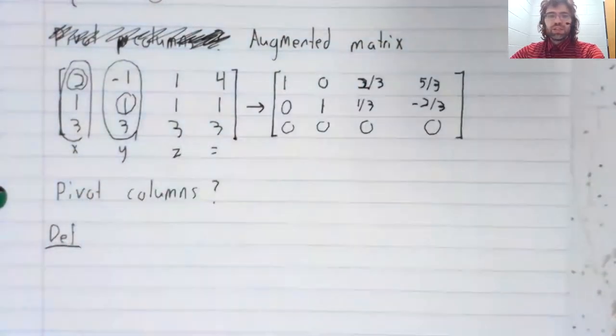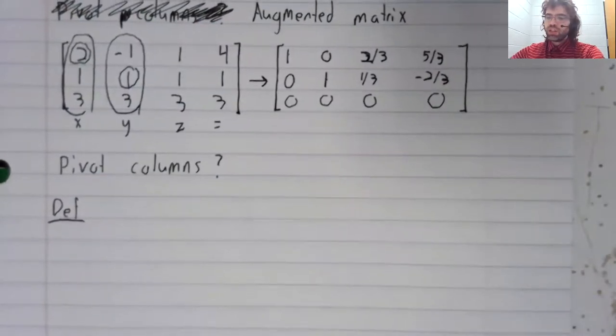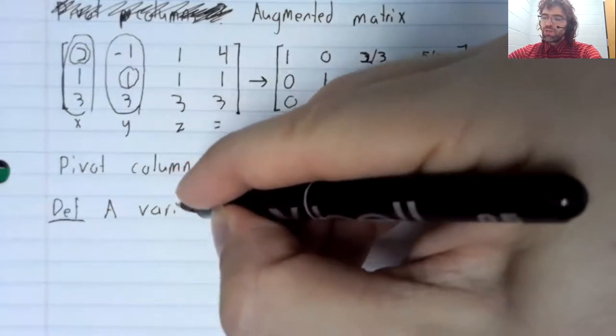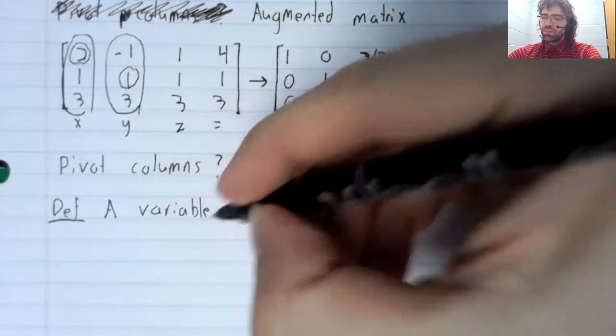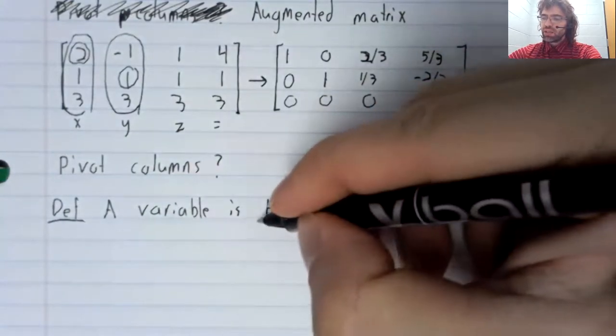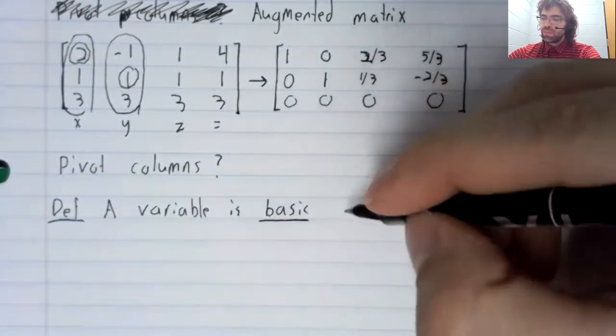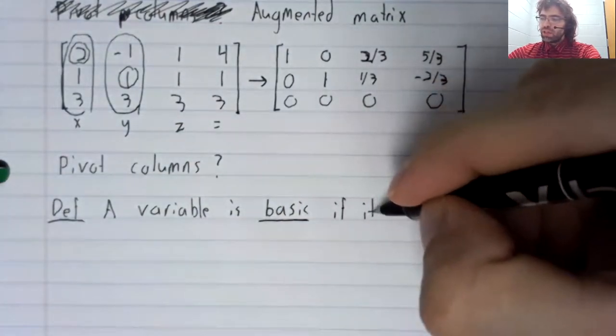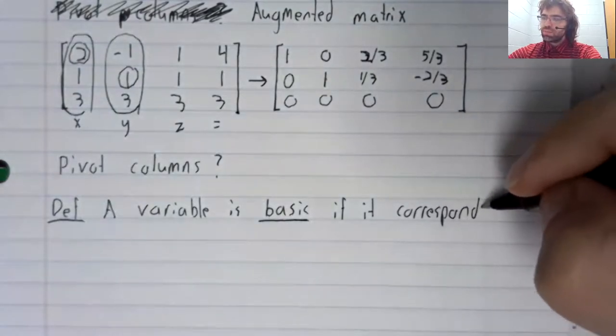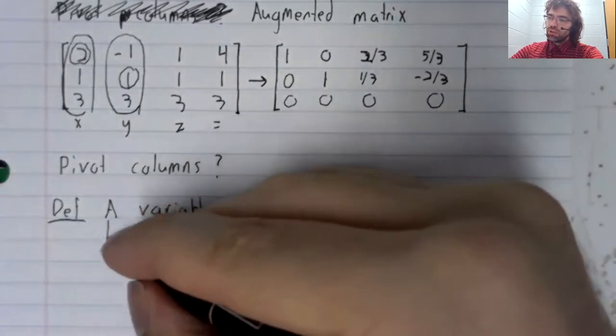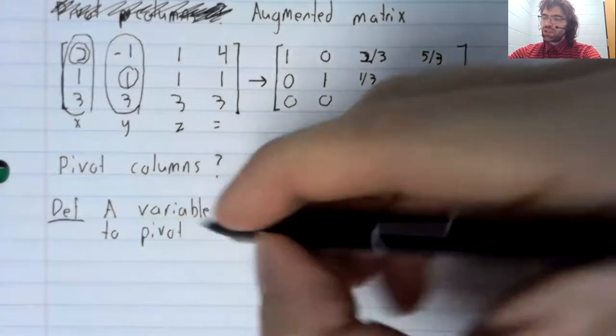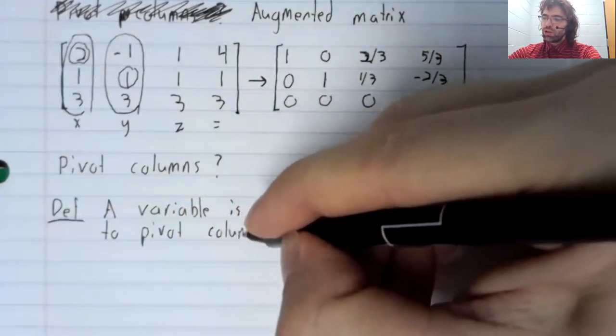And now we will state the definition. A variable is called basic if it corresponds to a pivot column.